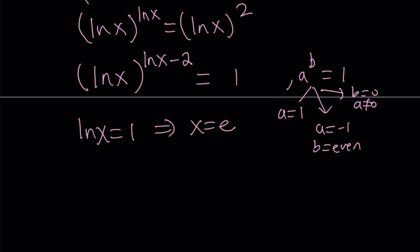What about the other options? If a is equal to negative one, so we have ln x equals negative one, then this just means that x is equal to e to the power of negative one, which can be written as one over e. But we also have to have that b is even. So when x is equal to this, do you think ln x minus two is going to be even? Let's find out.